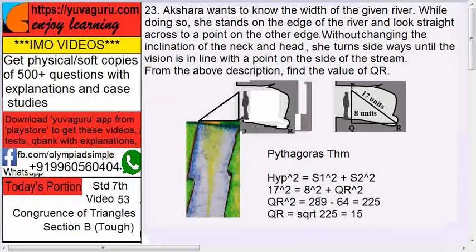Hypotenuse square equals to side one square plus side two square. So 17 square is 289, take 8 square on this side, means 64. So 289 minus 64, that is 225. Therefore QR square equals to 225. QR equals to square root of 225, that is 15. So that is the required answer.